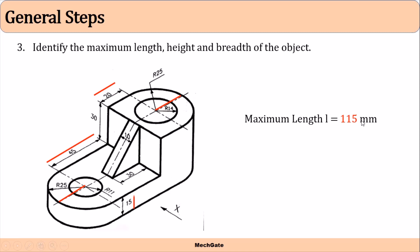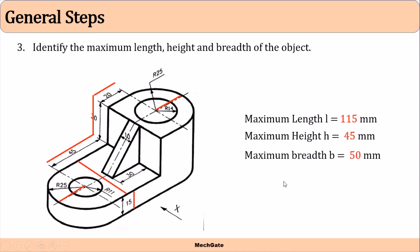The maximum height, which is the vertical dimension in the front view, is 15 plus 30, so that's 45. The maximum breadth, which is the horizontal dimension in the side view, is 50. So maximum length is 115, maximum height is 45, and maximum breadth is 50. For drawing the front view, if I make a rectangle of 115 by 45, then I can draw my front view inside that rectangle.